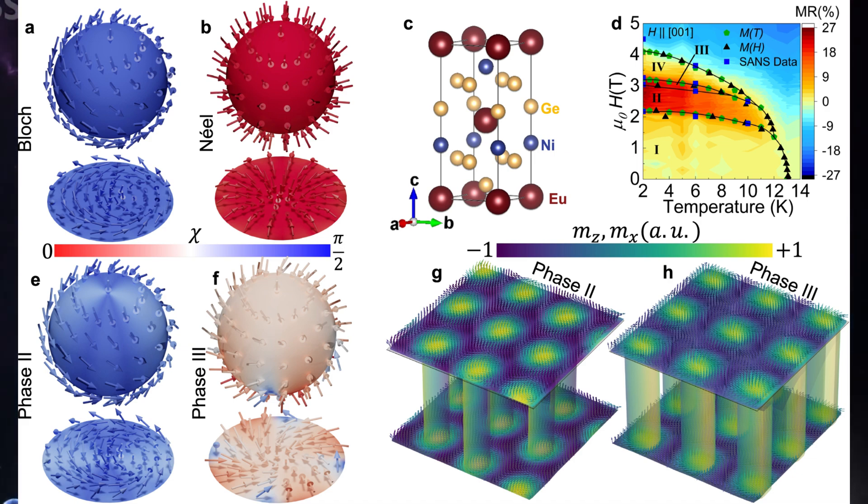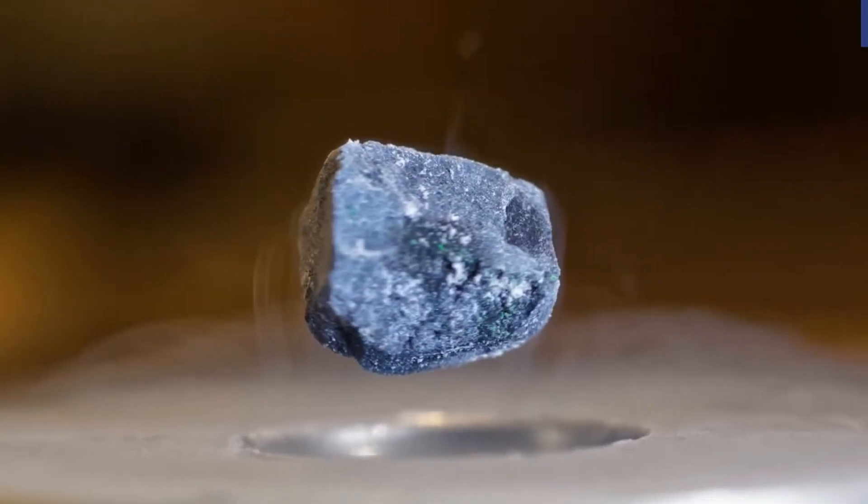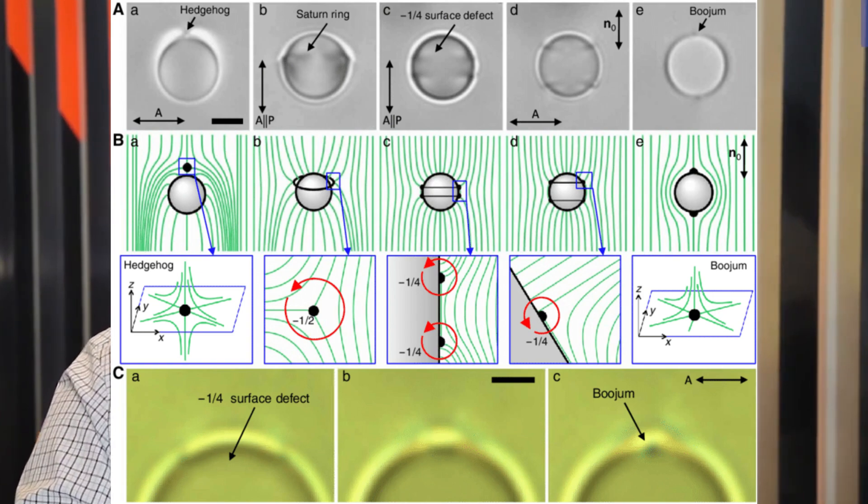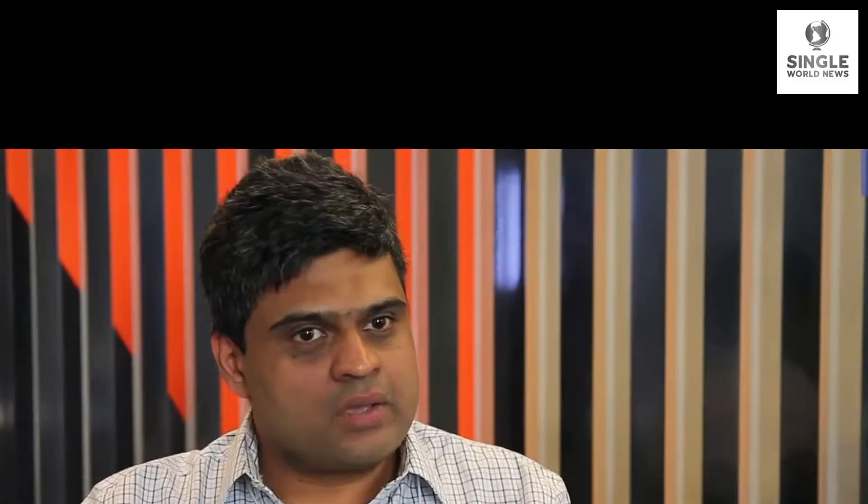A recurring theme in his research has been duality, in which new perspectives are obtained by reformulating physical problems in terms of topological defects. For example, one of his earlier contributions helped identify the key role played by hedgehog defects at certain phase transitions. A more recent work proposed a dual formulation for Dirac fermions in two spatial dimensions. Of late, his work has increasingly utilized ideas from information theory to understand and classify novel phases of matter.